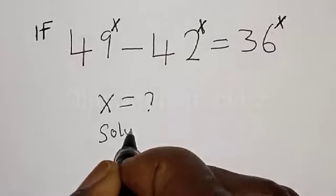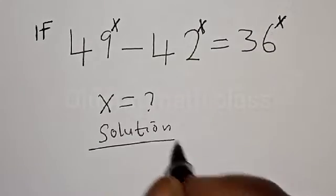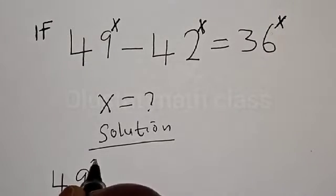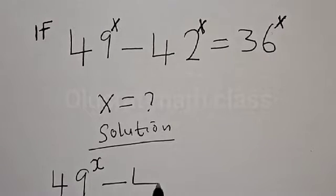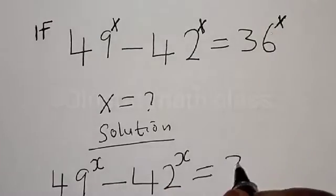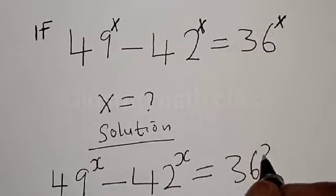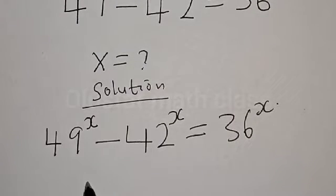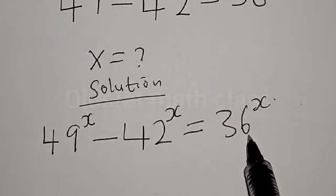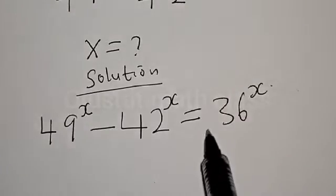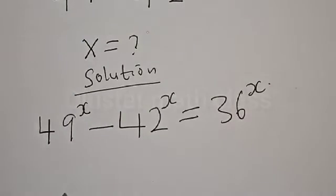Solution. We have the given equation: 49 raised to power s minus 42 raised to power s is equal to 36 raised to power s. If you look at this equation very well, 49 is a perfect square, 36 is also a perfect square, but 42 is not a perfect square. So let's divide both sides by 36 raised to power s.